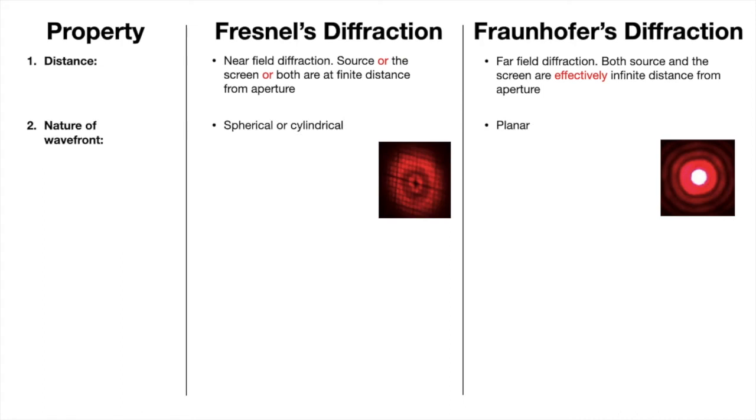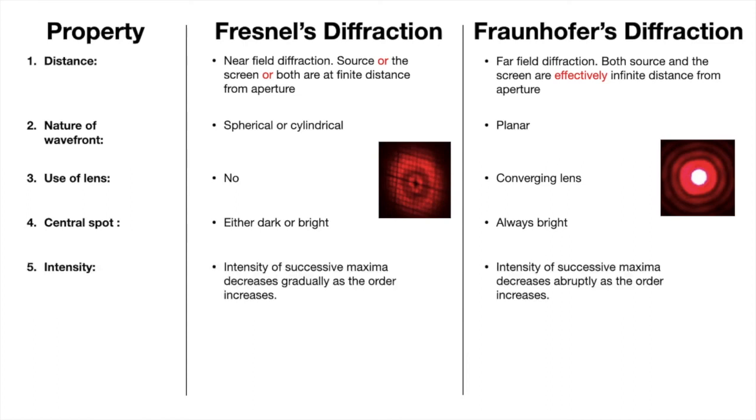Then, nature of wavefront. Fresnel's has spherical or cylindrical wavefront, whereas Fraunhofer has a planar wavefront. There is no lens used in Fresnel's class, whereas Fraunhofer's involves the use of converging lenses. Central spot is either dark or bright in Fresnel's, and always bright in Fraunhofer's.